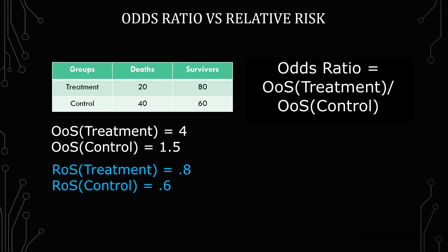Looking at the odds ratio, I'm going to calculate based off treatment over control. So I'm going to have 4 over 1.5, and I get 2.6 repeating — I'm going to round to 2.67.